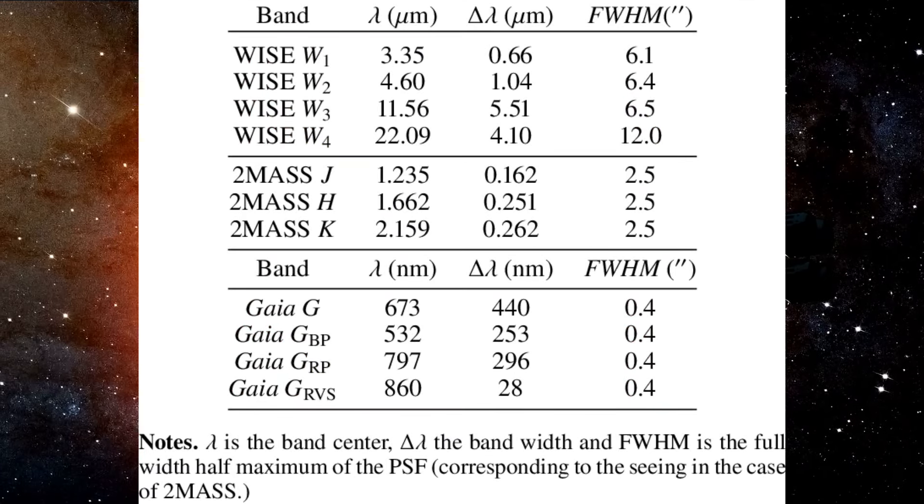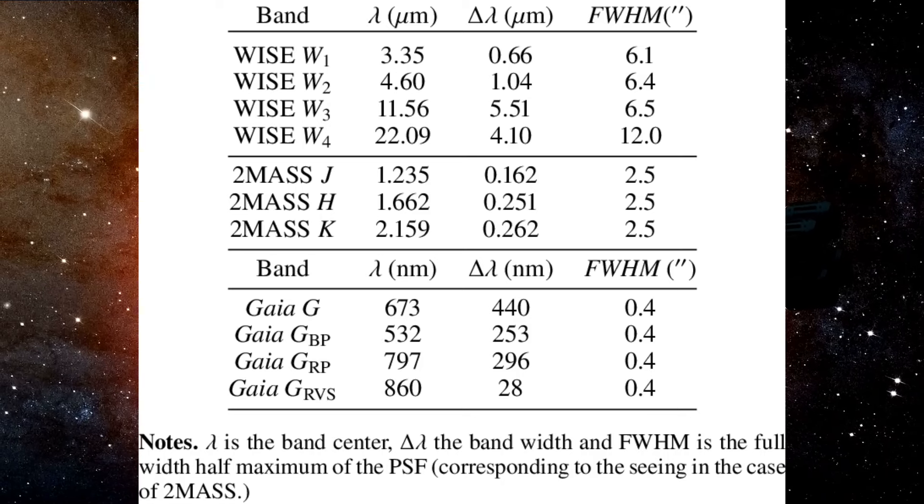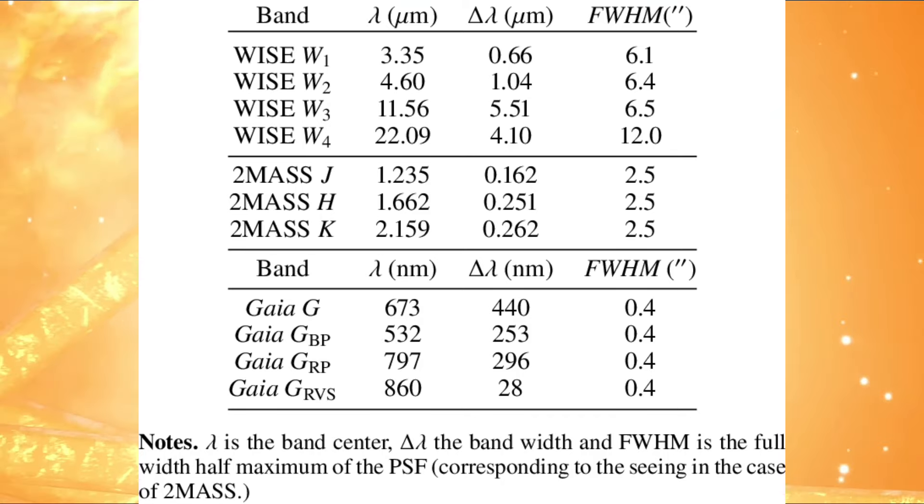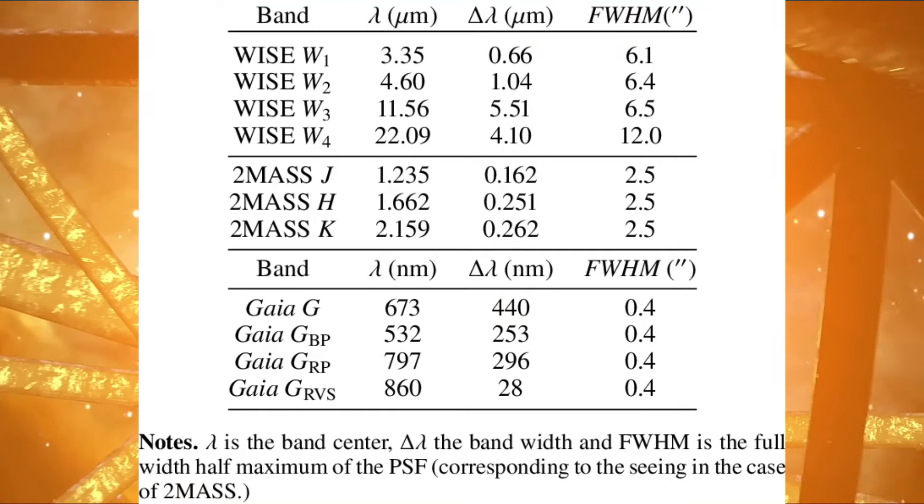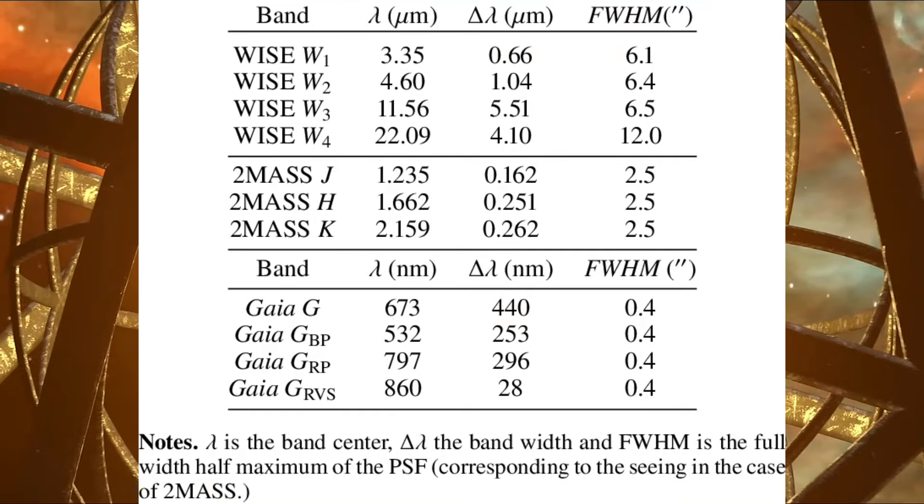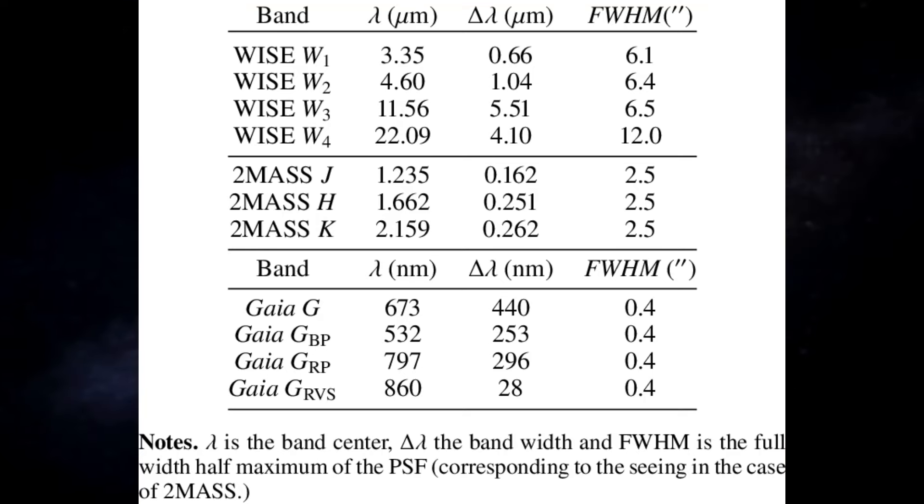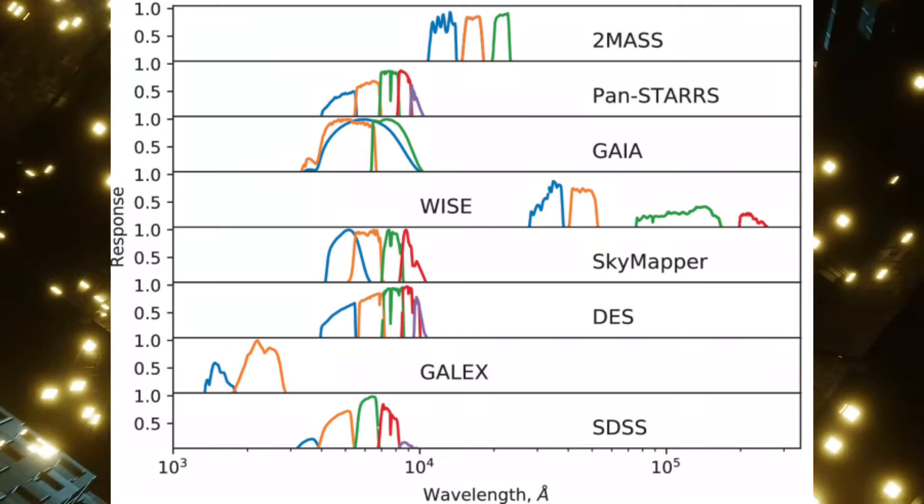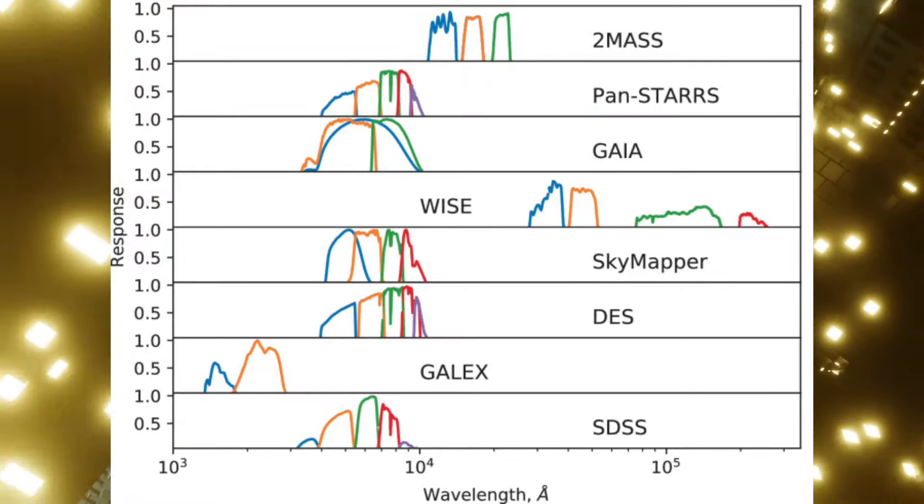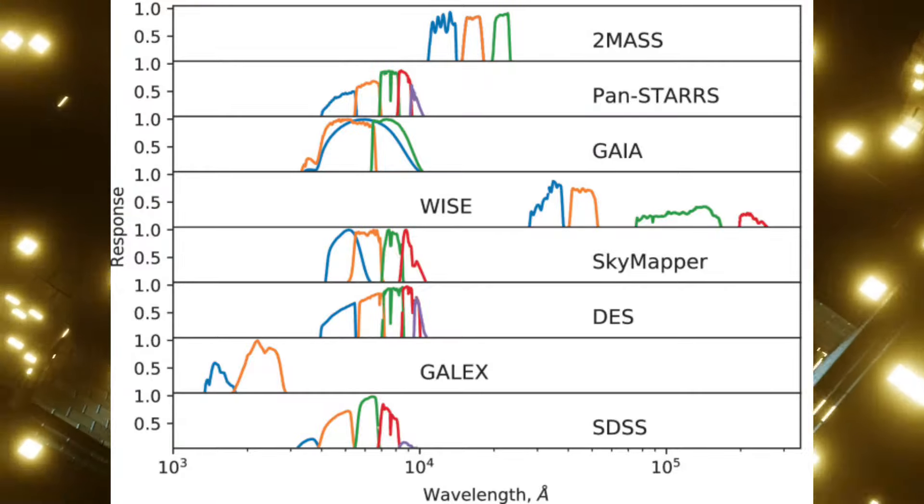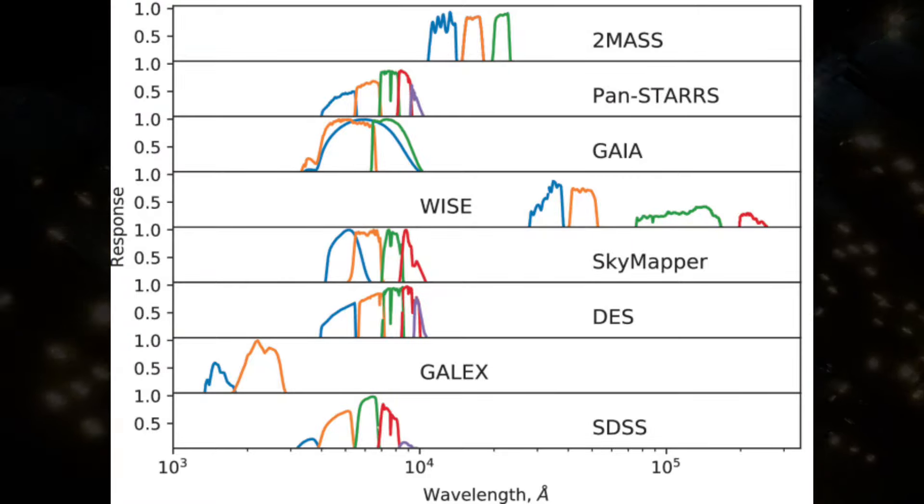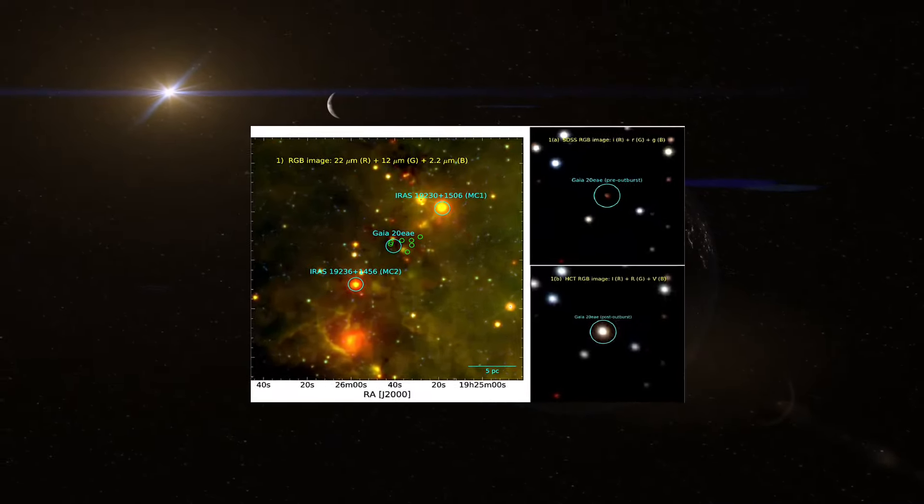Parsing through this immense data trove requires a specialized approach. The team developed a meticulous pipeline to sift through the amalgamated data, targeting sources exhibiting anomalous infrared emissions indicative of partially constructed Dyson Spheres. However, discerning these technosignatures from natural phenomena poses a significant challenge. The pipeline's task includes distinguishing circumstellar dust rings, nebulae, and background galaxies emitting similar infrared signals.